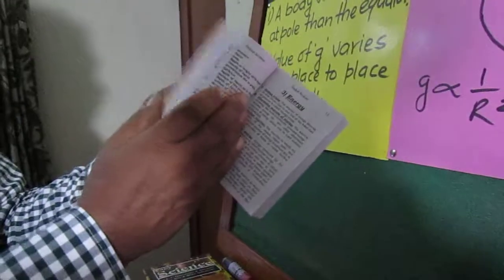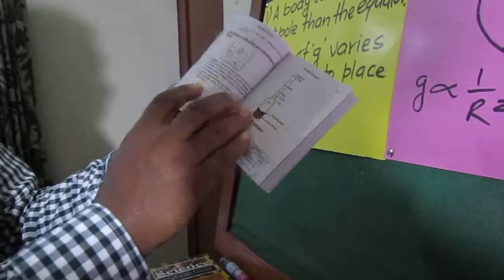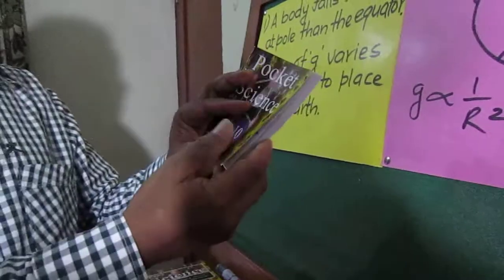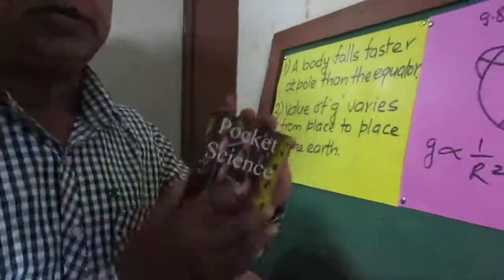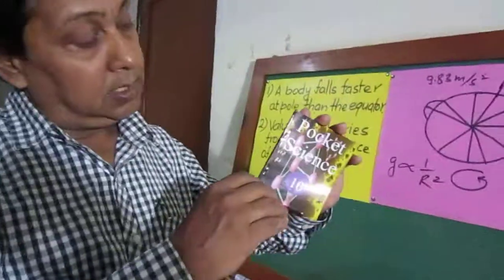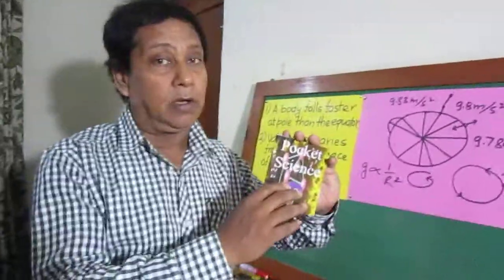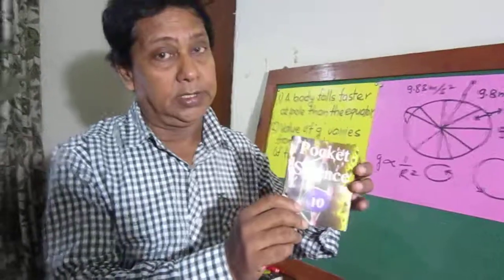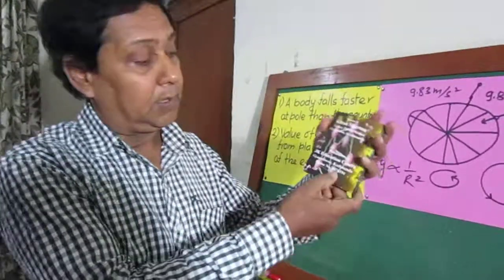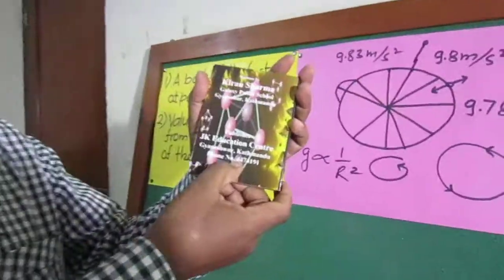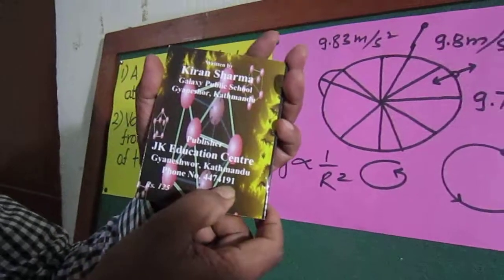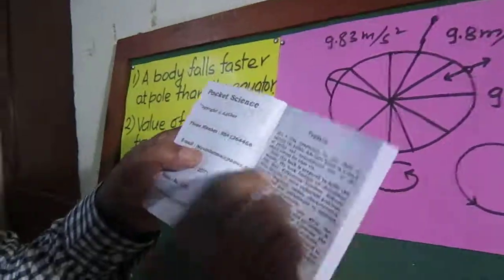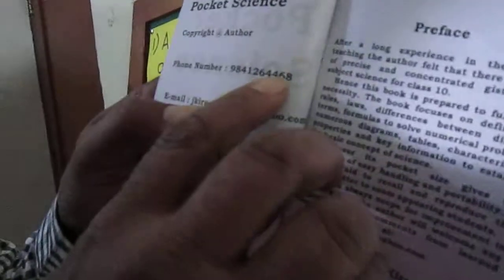The formulas are also written. In this way I wrote the gist of science of class 10 of the SLC syllabus of Nepal. If you want it, you can get it easily. Make a phone call to 4474191 or make a phone call to 9841264468.